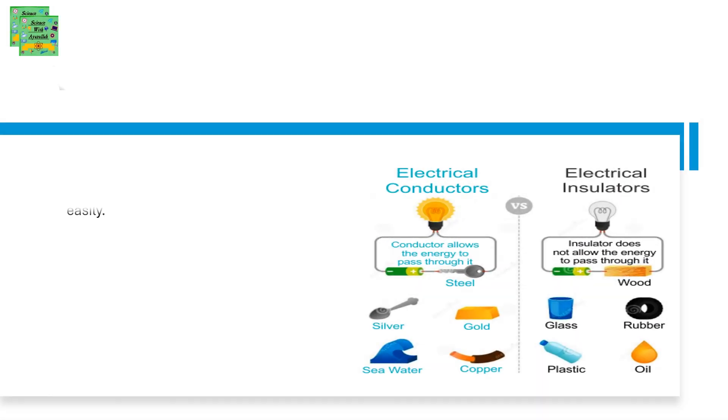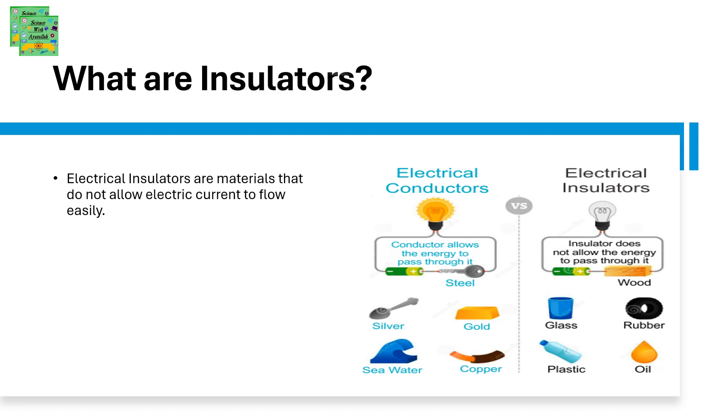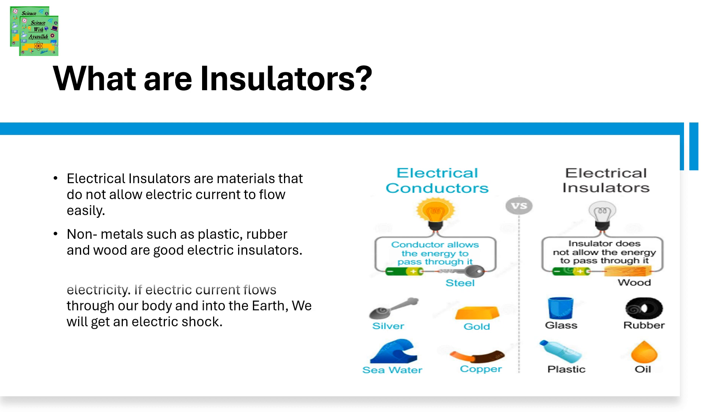What are insulators? Insulators are the just opposite of what conductors are. So insulators are materials that do not allow electric current to pass easily. Non-metals such as plastic, rubber and wood are good electrical insulators.